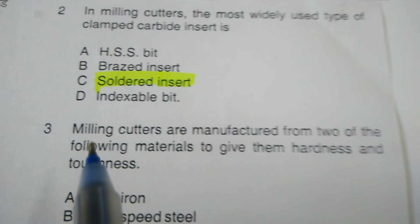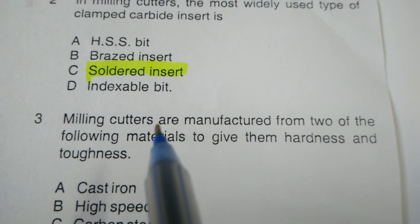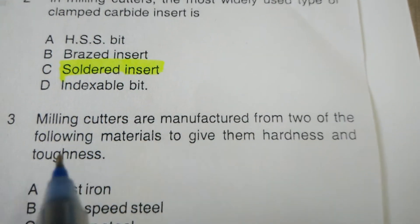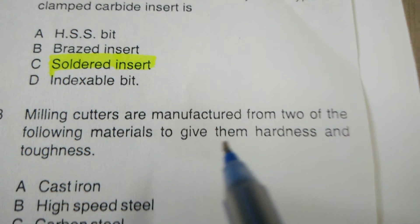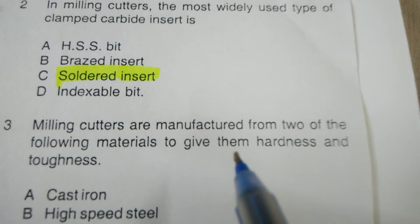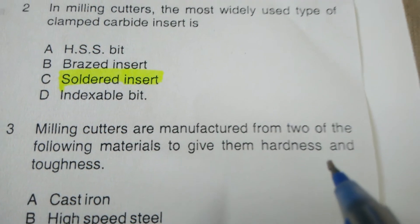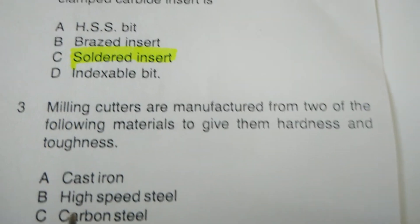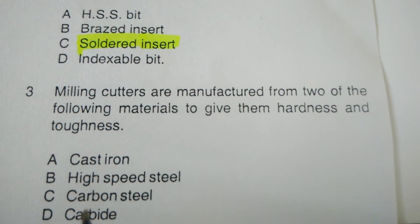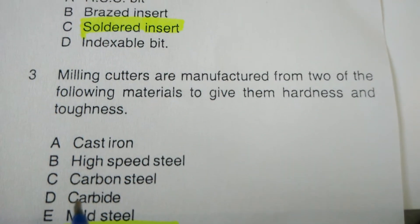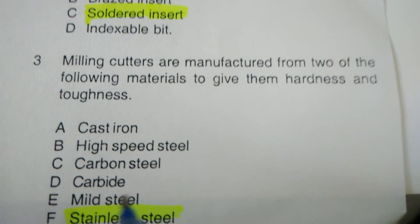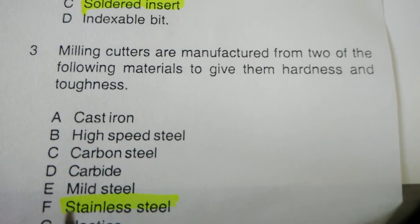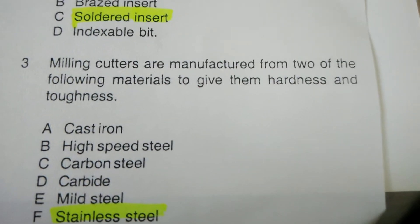Next objective: Milling cutters are manufactured from which two of the following materials — cast iron, high-speed steel, carbon steel, carbide steel, mild steel, or stainless steel? The correct answer is high-speed steel and carbide steel.